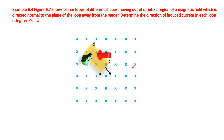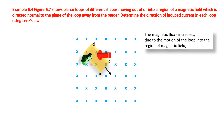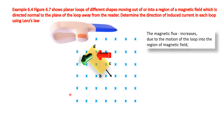Now we apply the right-hand thumb rule. Keep your right-hand thumb pointing in the direction of the induced magnetic field, then curl the other fingers. If the thumb shows the direction of the induced magnetic field, the other fingers show the direction of the induced current. Here, the other fingers point in the anti-clockwise direction. So the direction of the induced current is A, B, C, D.